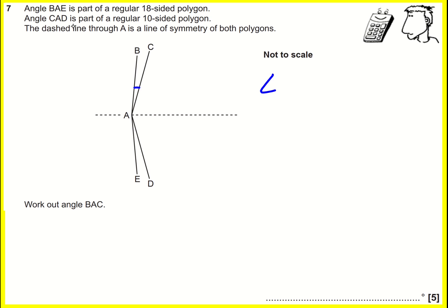Okay, so angle BAE. There are two ways to calculate this, and I think I'm going to talk through both. The first way is to realize that for any polygon, it's the number of sides minus two times 180.